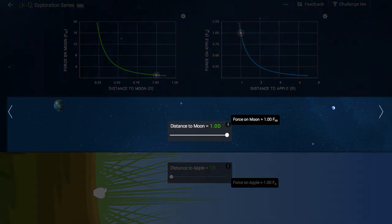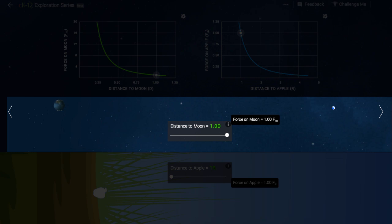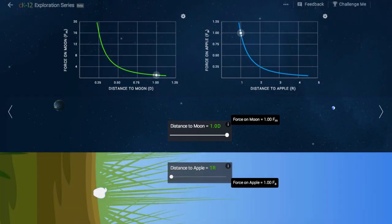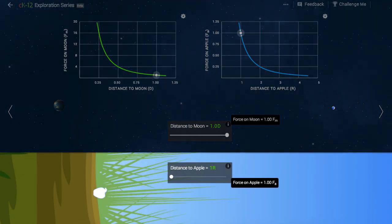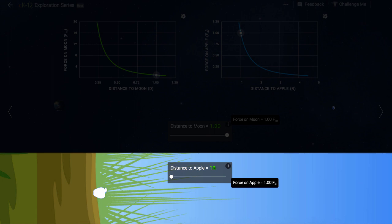The top image here shows the earth and the moon to accurate scale. Most people think the moon is much closer than what we've shown here, but that's a misconception. The bottom image here shows an apple on the earth, but we can lift the apple off of the earth.